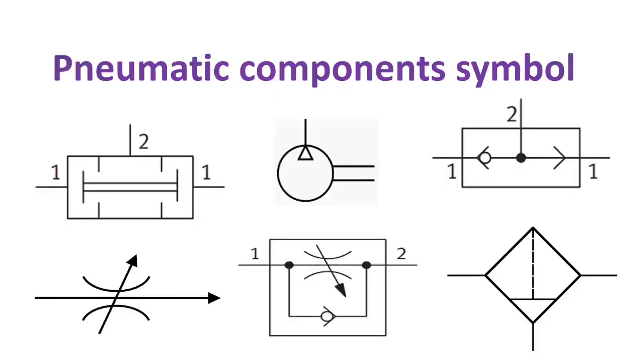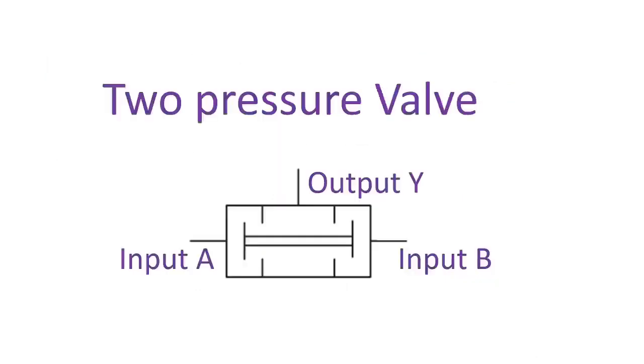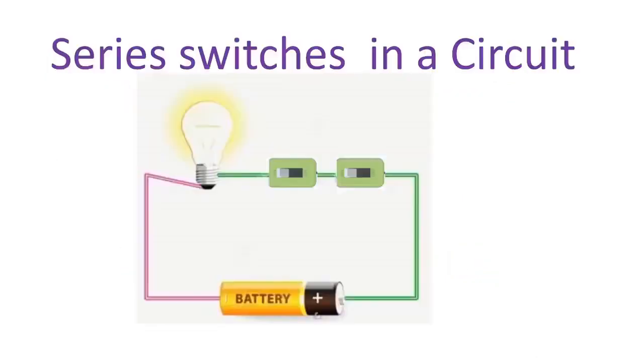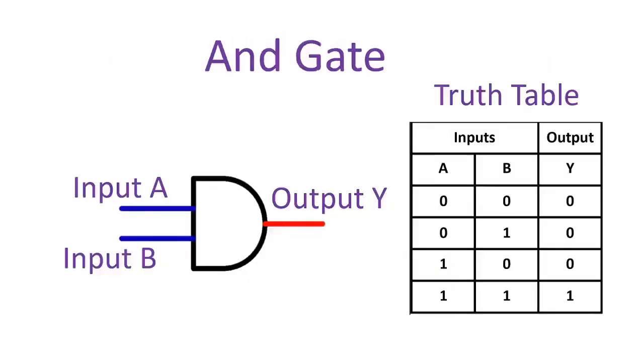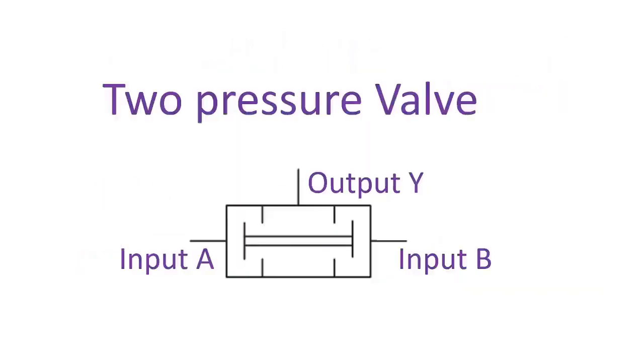Now let's proceed to our pneumatic component symbols. The two pressure valves work on the same principle with series circuit and AND gate. The output of the two pressure valve is true or high if the two pressure inputs A and B are true, otherwise it's false.